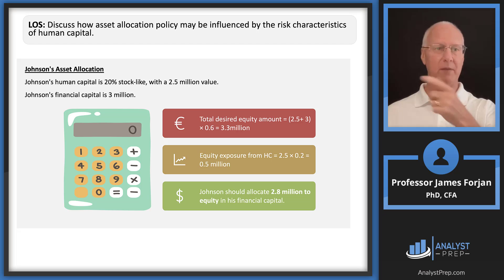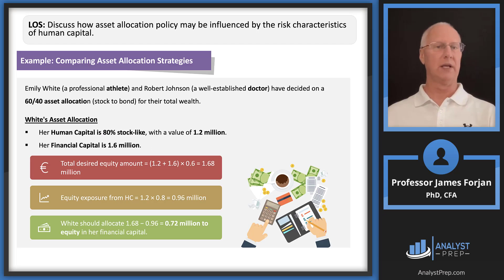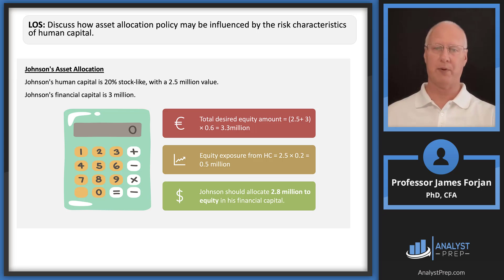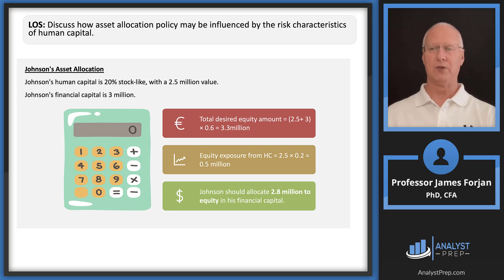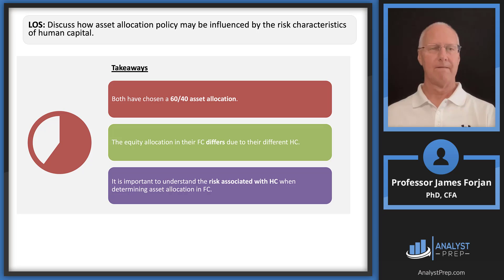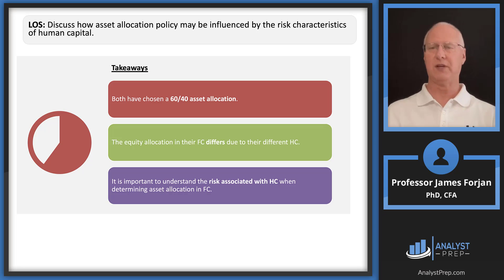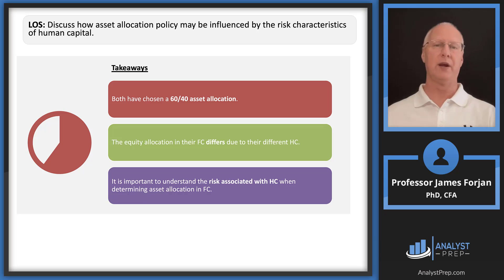For Johnson, the same approach applies, but his human capital is only 20% stock-like. His financial capital is $3 million and human capital is $2.5 million. Applying the same math, his human capital equity exposure is much lower, so he allocates $2.8 million of equity to his financial capital. Both clients have a 60-40 asset allocation, but their actual allocation within financial capital differs significantly due to their different human capital profiles.